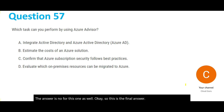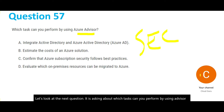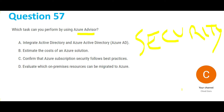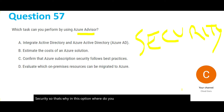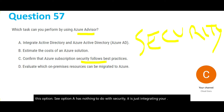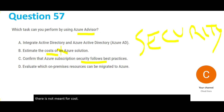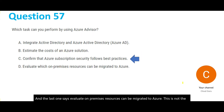This question asks which task you can perform using Azure Advisor. Advisor is all about security. Option A — integrating Azure directory with Azure Active Directory — has nothing to do with security, so it is wrong. Option B is about cost — Advisor is not meant for cost. Option D — evaluating on-premise resources that can be migrated to Azure — is a different service. The thumb rule is: if you see Advisor, think security. The correct answer is option C.